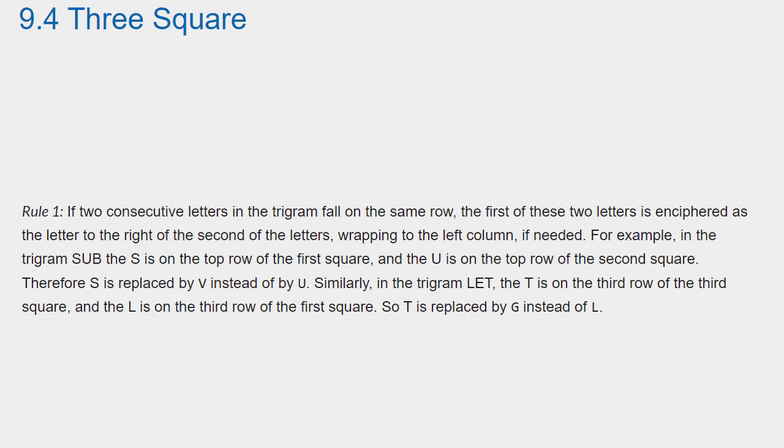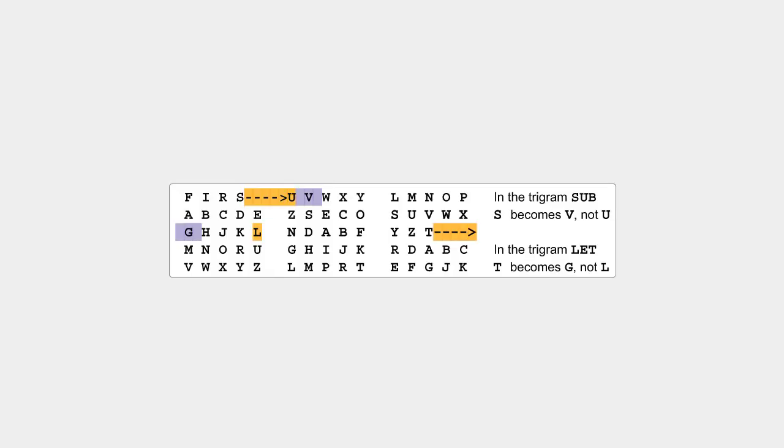Similarly, in the trigram LET, the T is on the third row of the third square and the L is on the third row of the first square, so T is replaced by G instead of L. This diagram illustrates Rule 1. Without Rule 1, in the trigram SUB, the S would be replaced by U. Instead, it is replaced by the letter to the right of U in the middle square, namely V.